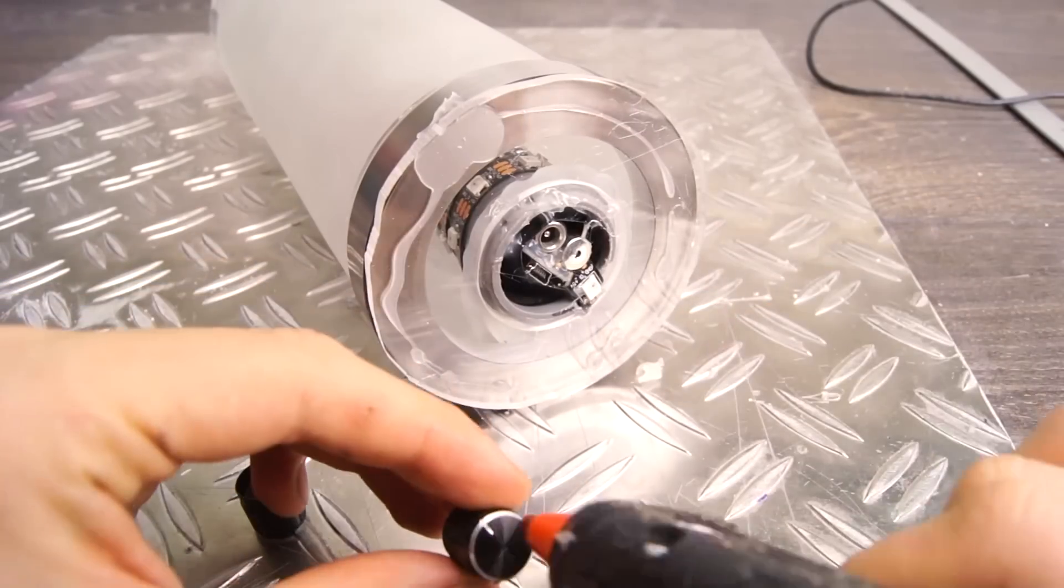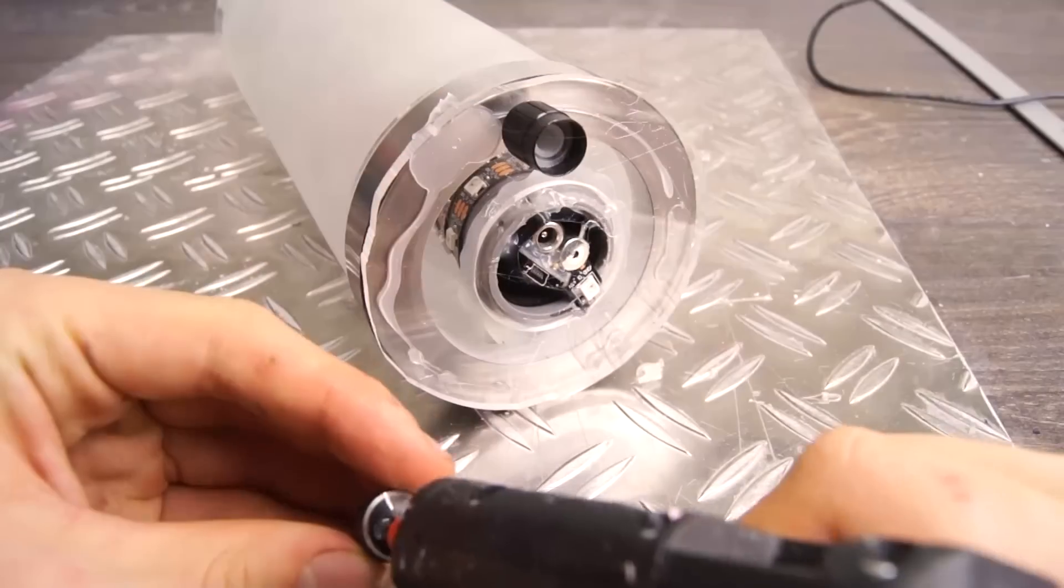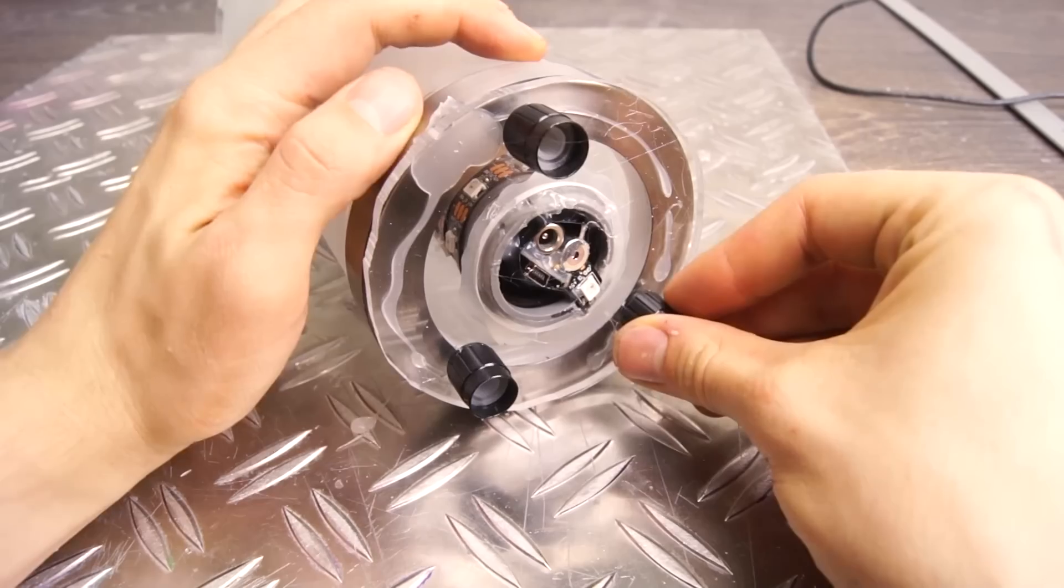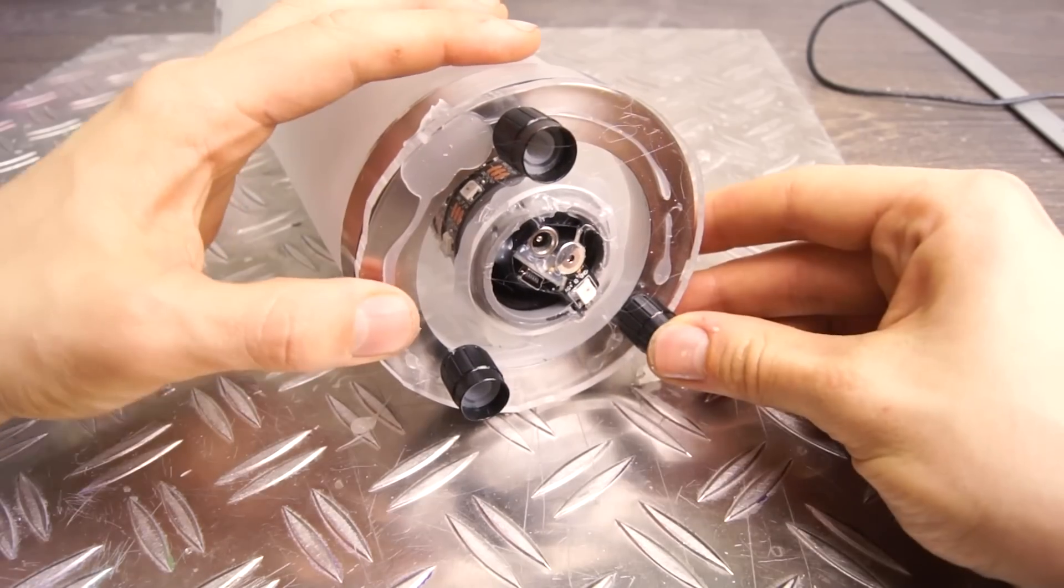To give the sound detector some space and give ourselves some room to put in the cables, we can take some knobs and use it as small legs for it to stand on. Anything can work as legs really. Just make sure it looks okay.